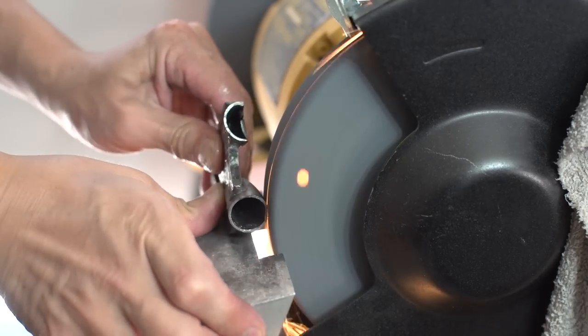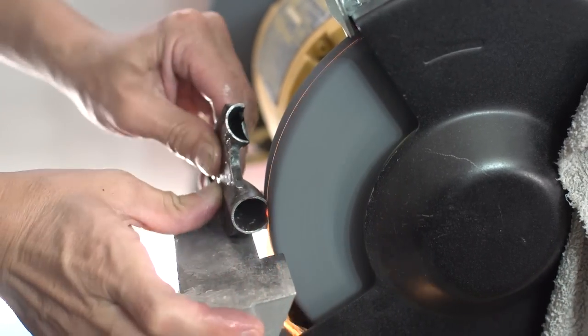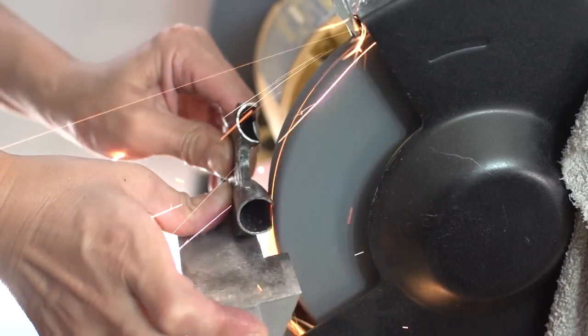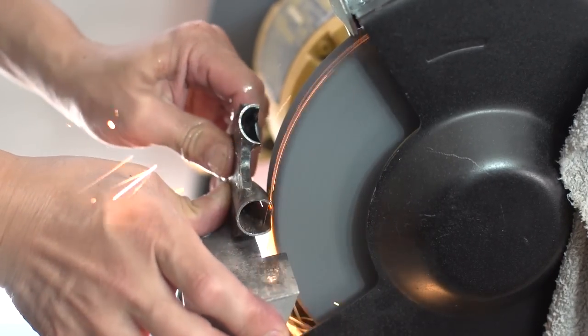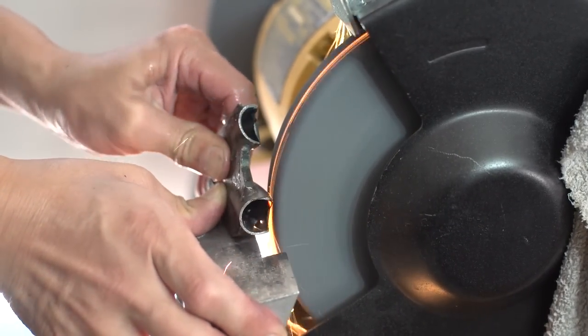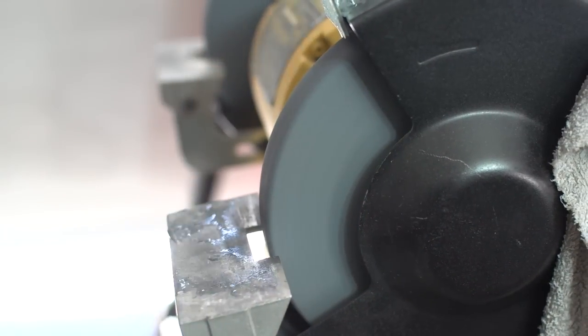The dropouts, these are slotted dropouts. I won't re-slot them. Instead, I'll slot the chainstays and seatstays. And those will just fit around the dropouts.